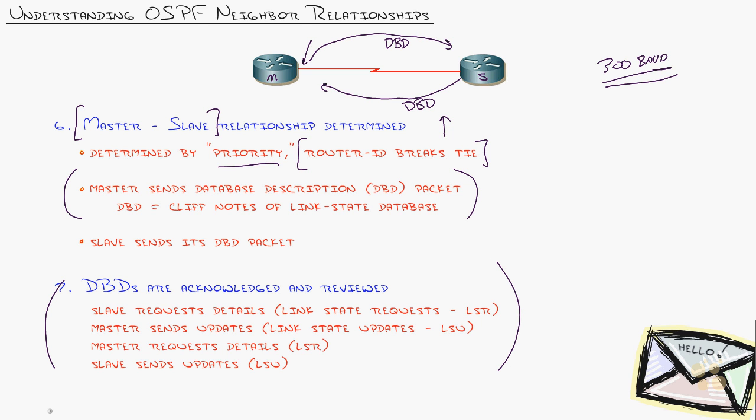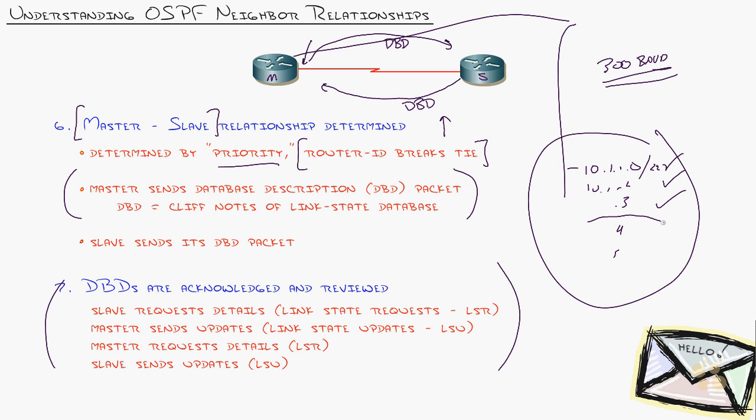Once the DBDs are reviewed, they play a ticky-tacky game of LSRs and LSUs. The master sent a DBD listing networks: 10.1.1, 10.1.2, 10.1.3, and so on. The slave reviews it and realizes he doesn't know about 10.1.4.0. He sends an LSR: 'Could you send me more information about 10.1.4.0? It's not in my database.'